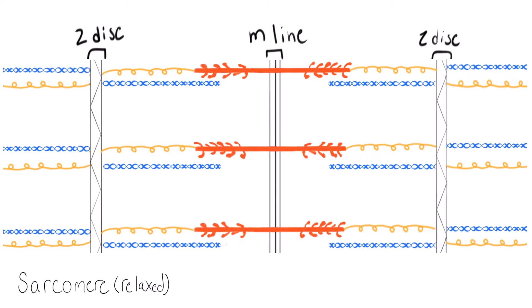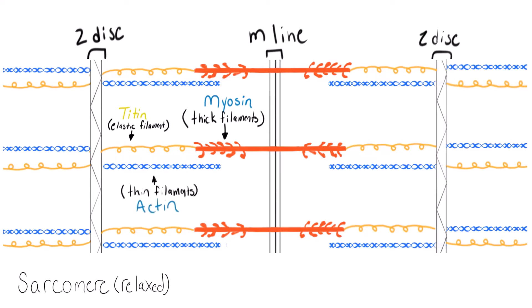There are two contractile proteins: actin and myosin. The myosin is the thick filament, and it is anchored to the Z-disc by an elastic filament sometimes called titin. That titin is anchoring the myosin to the Z-disc, but also the core of the myosin is actually made of titin, so it's also anchoring the myosin to the M-line. Actin are the thin filaments, and those are anchored to the Z-disc.